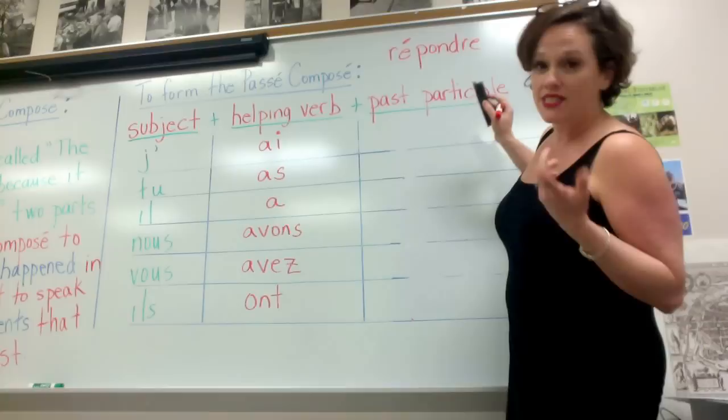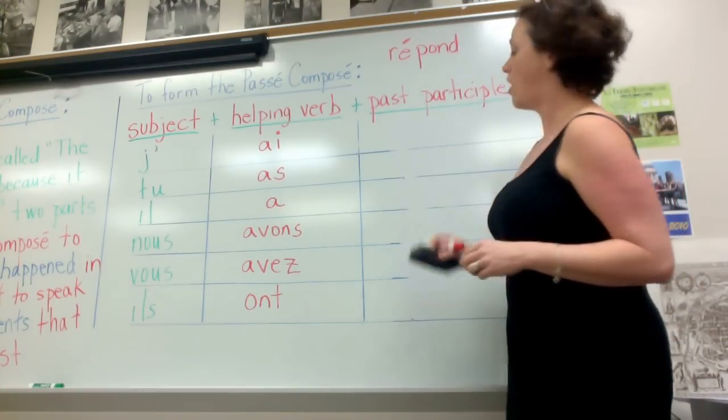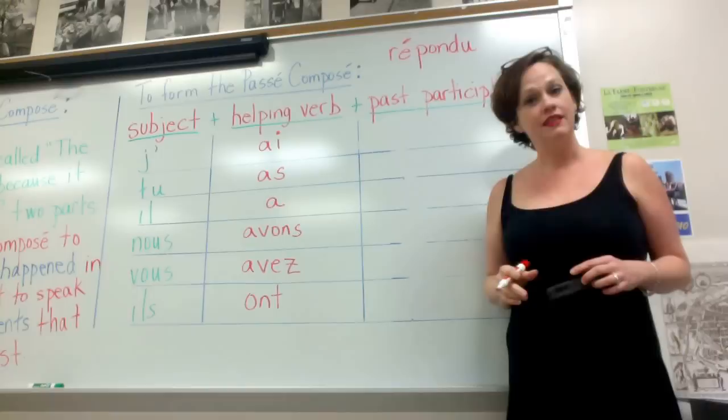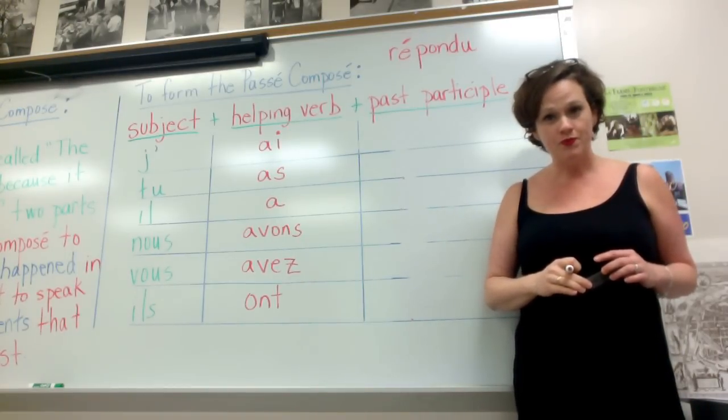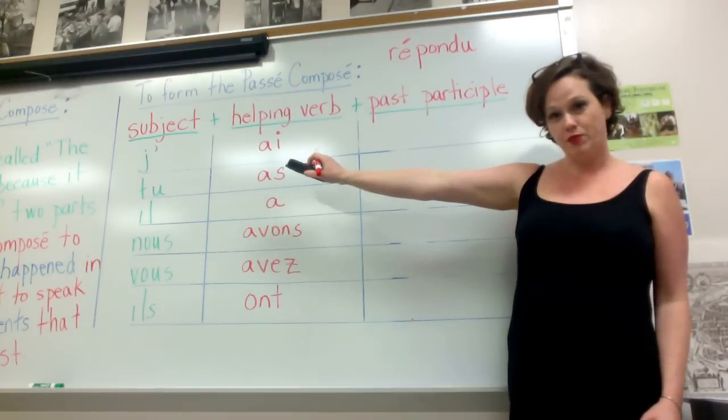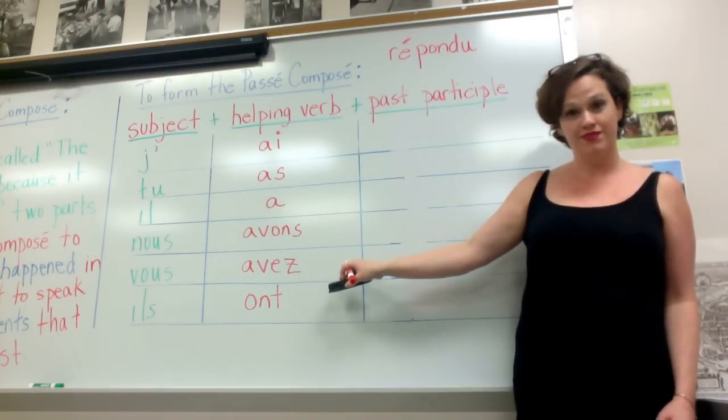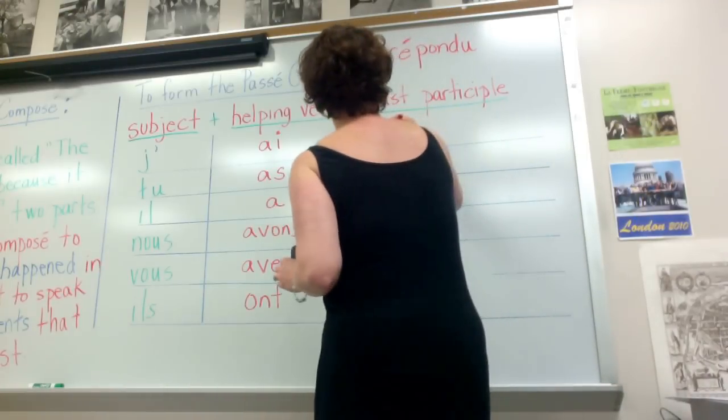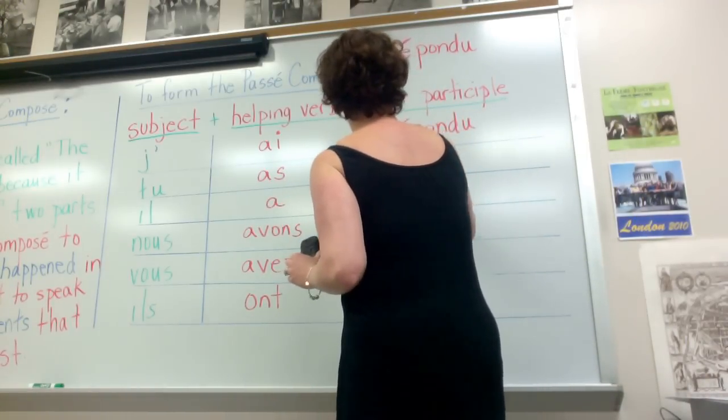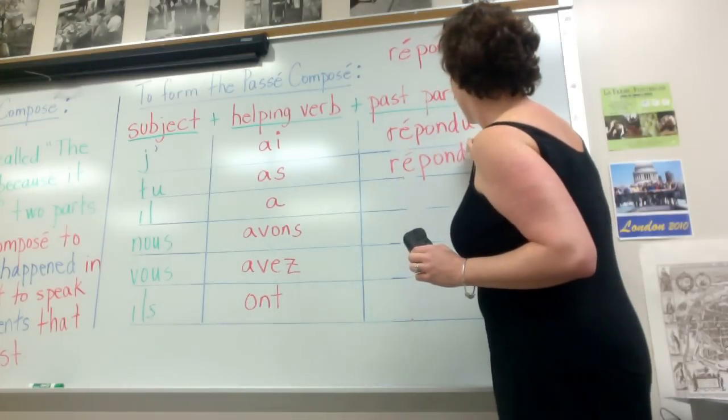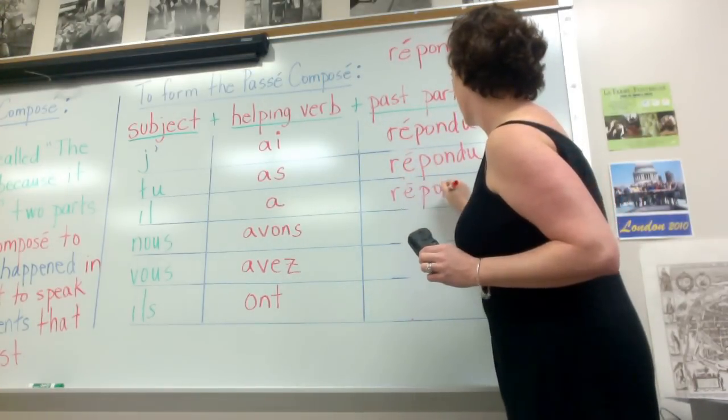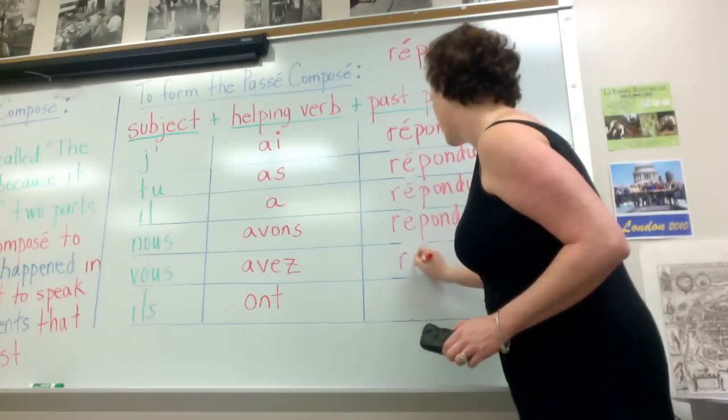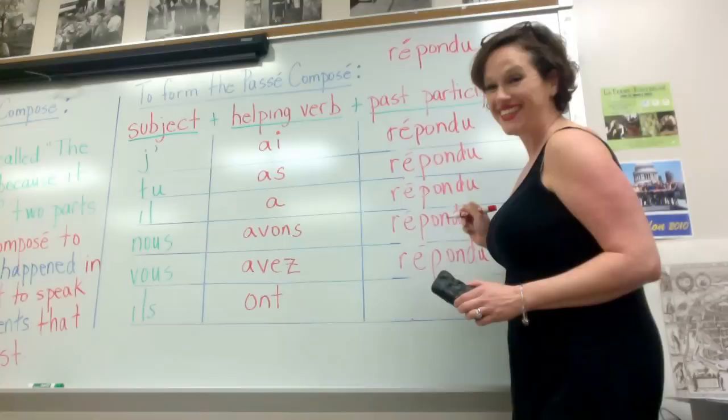In order to find the past participle of all regular RE verbs, what you have to do, we always have to take something off. So in this case, we take off the RE and then we have to add something as well. So you just add a U. And there you have it. The past participle of the verb répondre is répondu. Same subject pronouns. Same helping verb. Doesn't change. And we need our past participle. So 'I answered,' j'ai répondu. Tu as répondu. Il a répondu. Nous avons répondu. Vous avez répondu. And the last one, ils ont répondu.